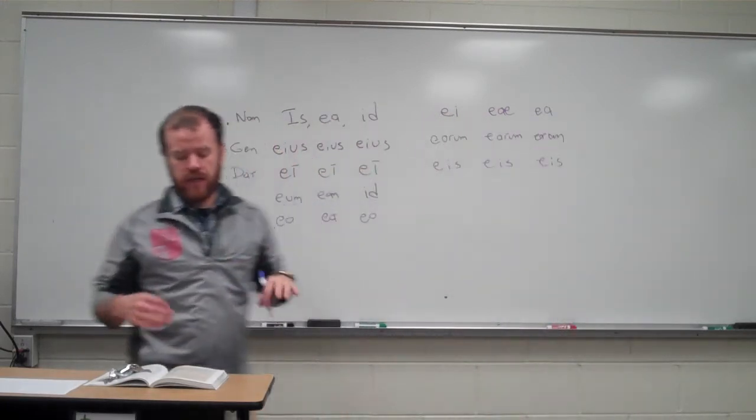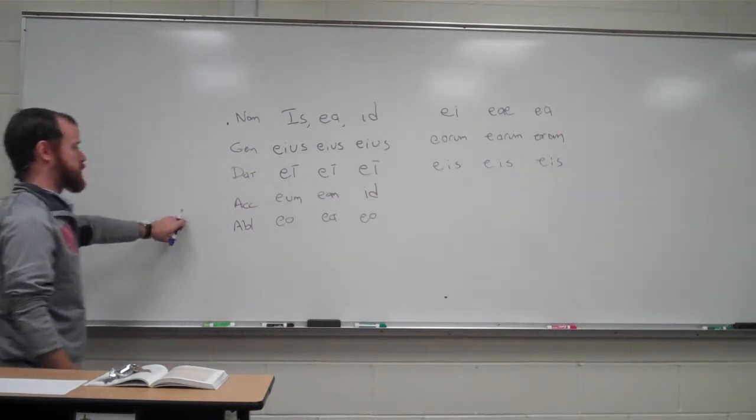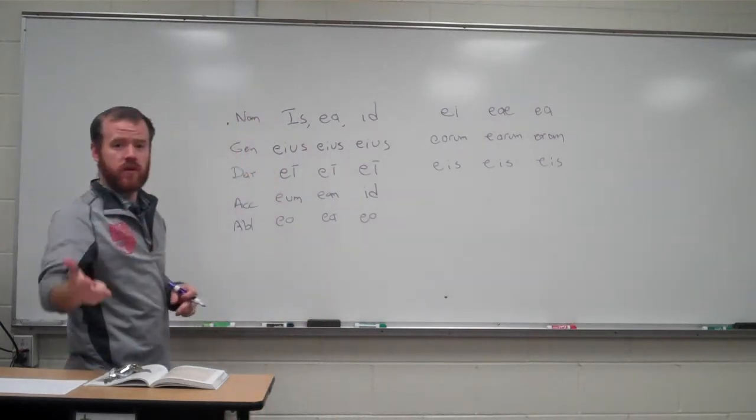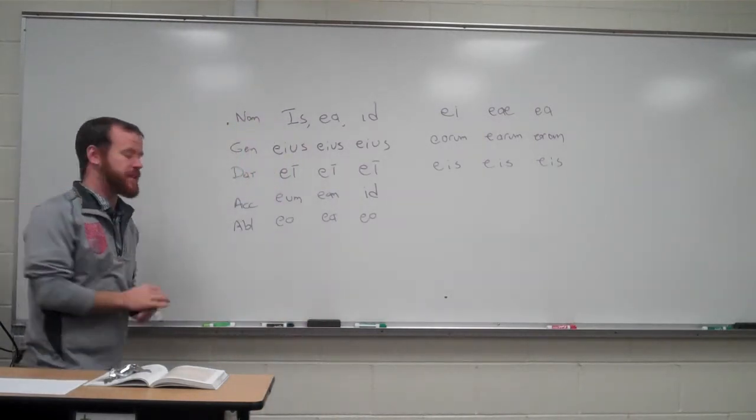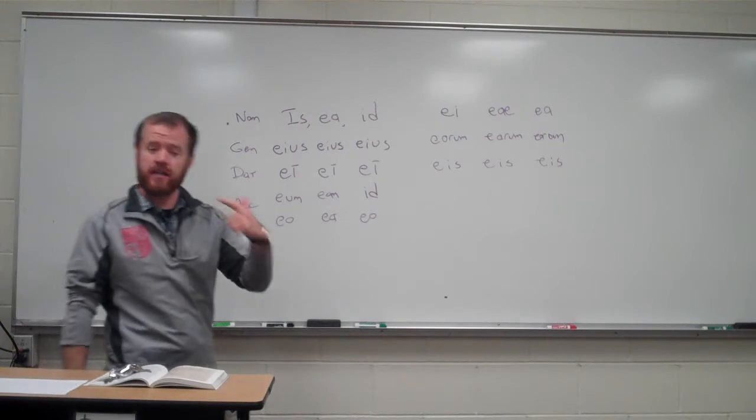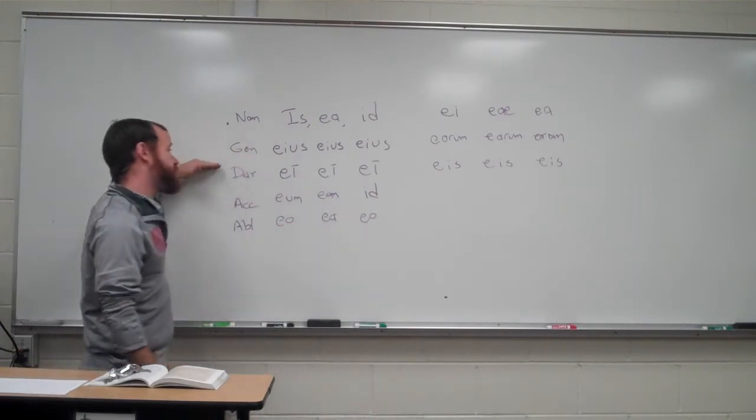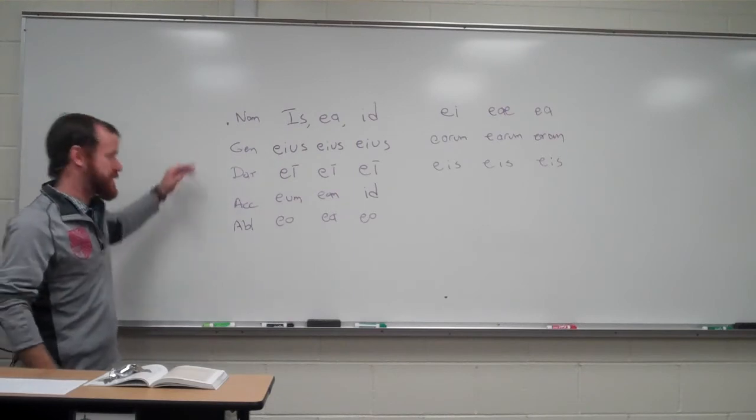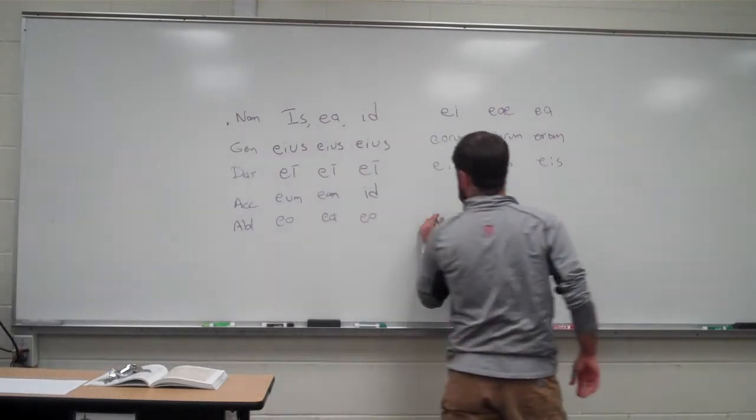And remembering how the datives and the ablative plurals work with the first and second declension, and the third declension, and the fourth and fifth declension actually, and then hic, haec, hoc and ille, illa, illud. What are we going to expect for the dative and ablative plural pattern here? Yes, it's also eis, eis, eis again.